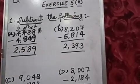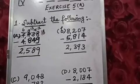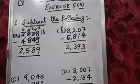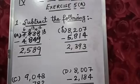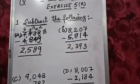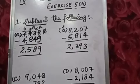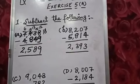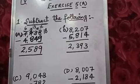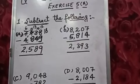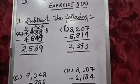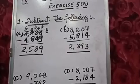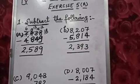Now let's see question number B. Question B is 8,207 minus 5,814. First of all we have to minus 4 from 7. So we will get 3. No need of taking borrow because 7 is greater than 4.